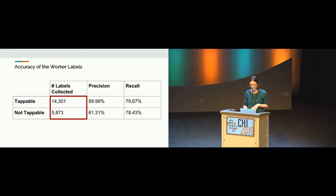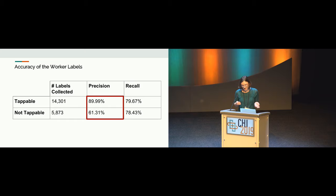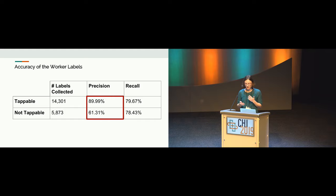Overall, we collected over 14,000 labels of tappable elements and close to 6,000 not tappable elements. When comparing the worker labels to the ground truth — the actual state in code — the workers did not do very well. They only labeled 90% of tappable elements correctly and only 61% of the not tappable elements. This tells us there is a significant usability problem and that people have a lot of misperceptions of tappability.